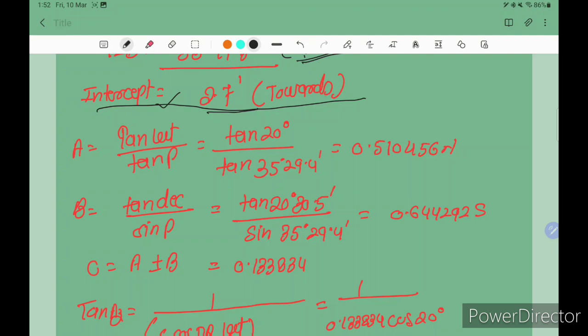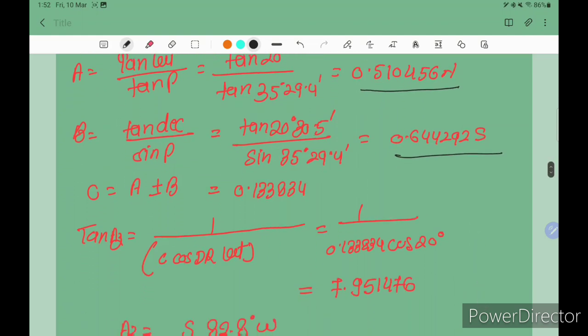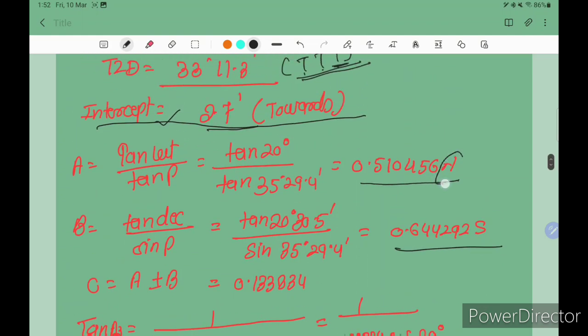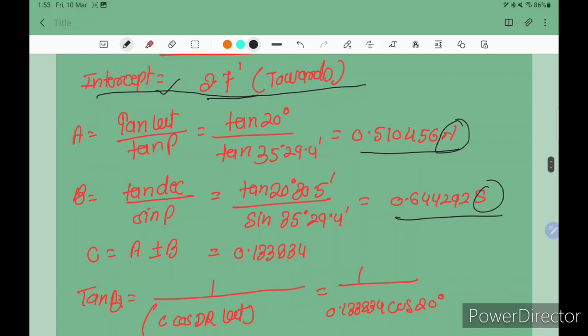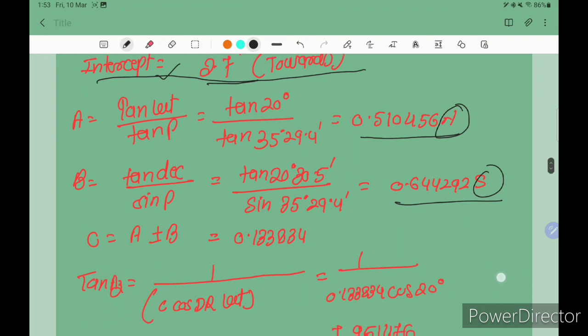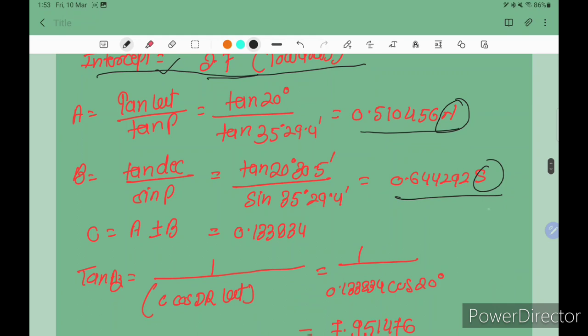If TZD is less than CZD, the answer is towards. So intercept value is 2.7 towards. Now we calculate ABC. The formula is A equals tan declination divided by tan P. Put the values and you'll get A. Then tan declination divided by sin P gives you B. It is south declination, so B is south. If you don't know the naming, watch my previous videos or write in the comment box.